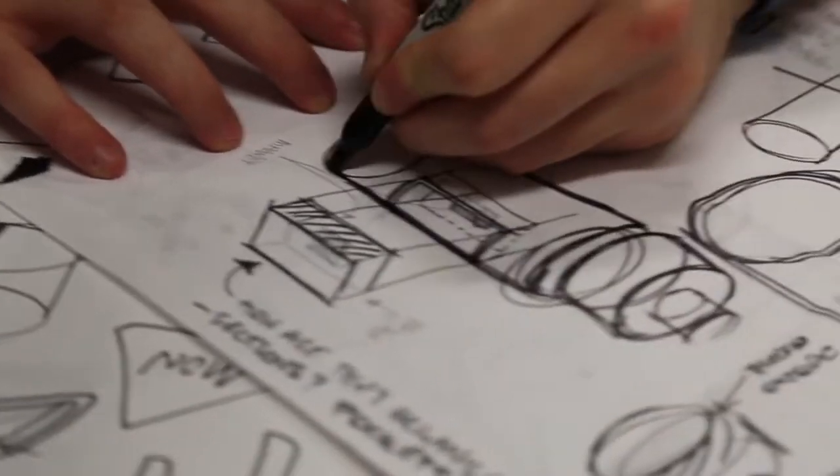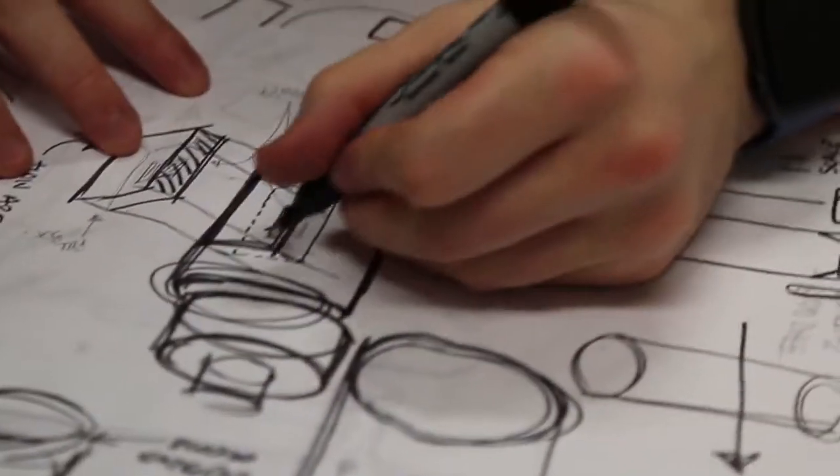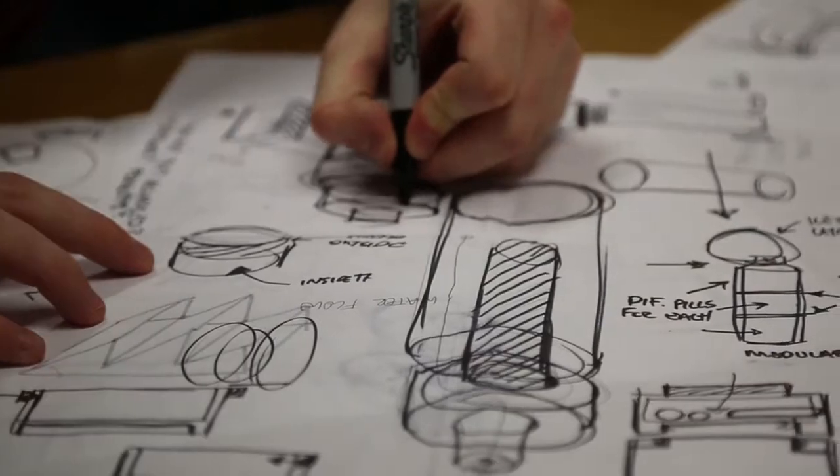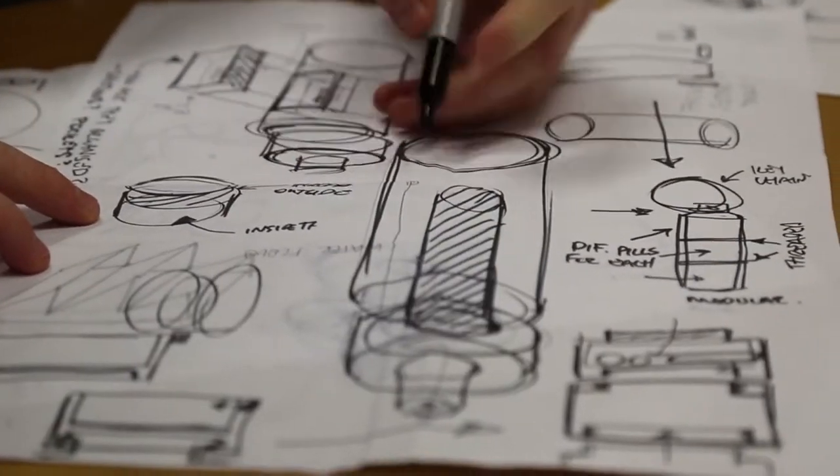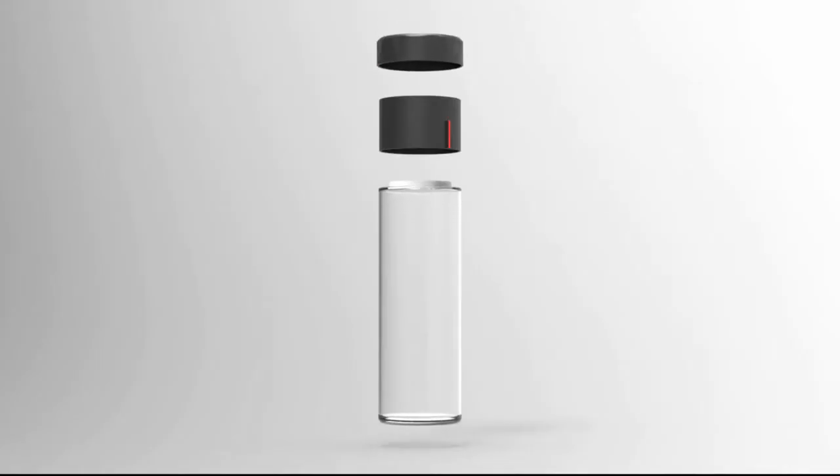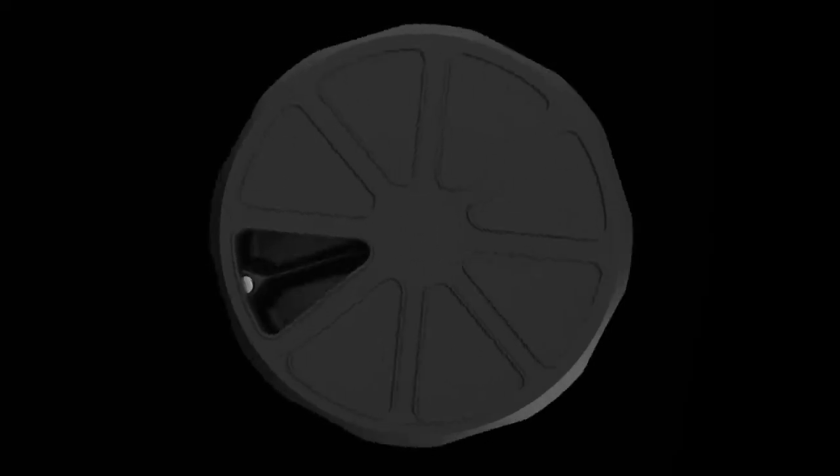We thought about integrating it into the middle of the bottle, the top, the bottom but we finally decided on the top as it was the simplest solution. So this is her bottle and the idea that we came up with is a container that basically just replaces this lid. In order to get to these pills you have to turn it around.